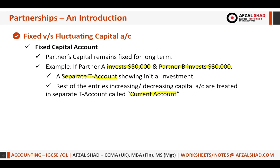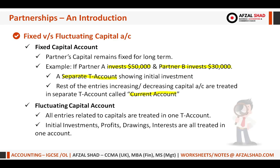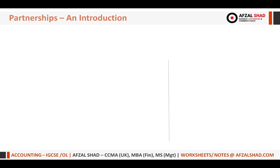In the fluctuating capital account — which is the older method already used in sole trader accounting and in partnerships — we have just one capital account. In that single capital account, all entries are treated together in one T-account. Let's have a quick summary of this comparison.